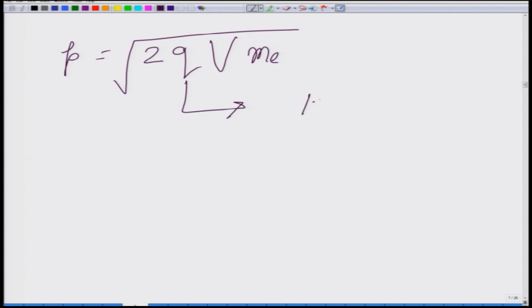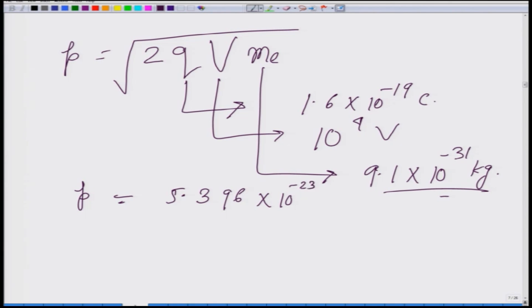Now q is 1.6 times 10 to the power minus 19 coulomb, v is given as 10 to the power 4 volt, m e is 9.1 times 10 to the power minus 31 kilogram approximately. So when I plug into this equation I get p as 5.396 times 10 to the power minus 23 meter kilogram per second and h is 6.626 times 10 to the power minus 34.